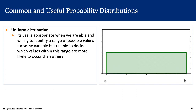Now I'm going to talk about some common and useful probability distributions used in uncertainty analysis. The first is the uniform distribution. Its use is appropriate when we are able to identify a range of possible values for some variable, but unable to decide which values within this range are more likely to occur than others. As shown in the figure, the value of a particular variable lies between values A and B, but we don't know which values are more likely — so we have a flat probability distribution where all values between A and B are equally likely.